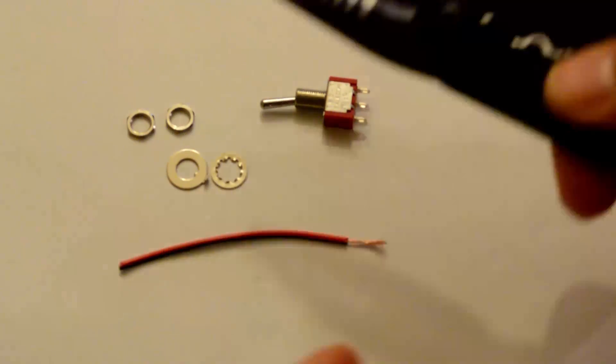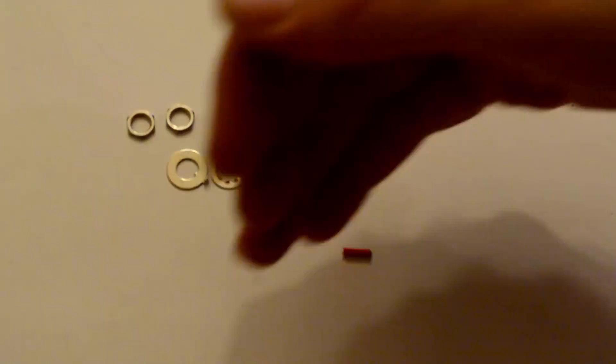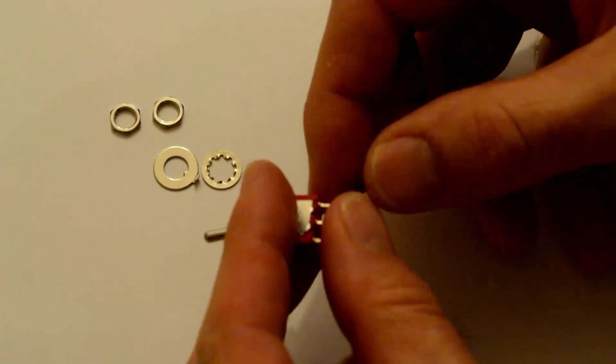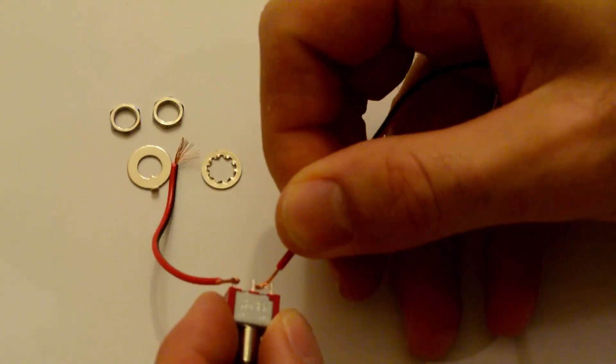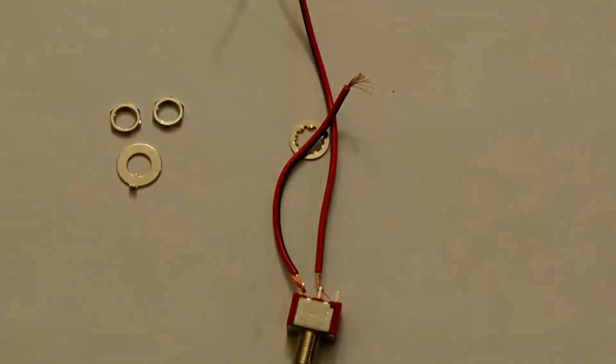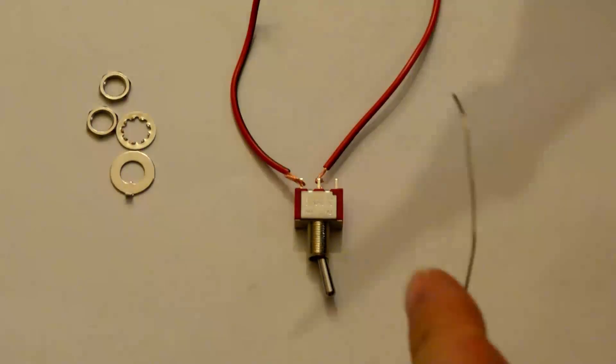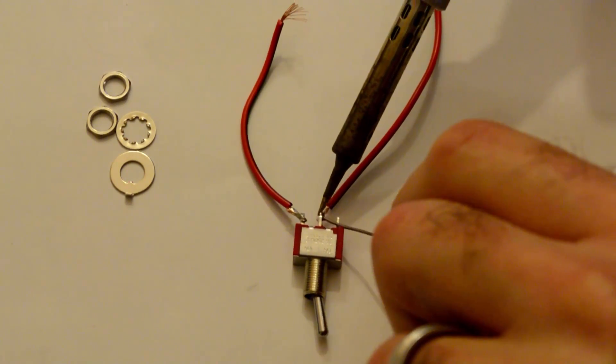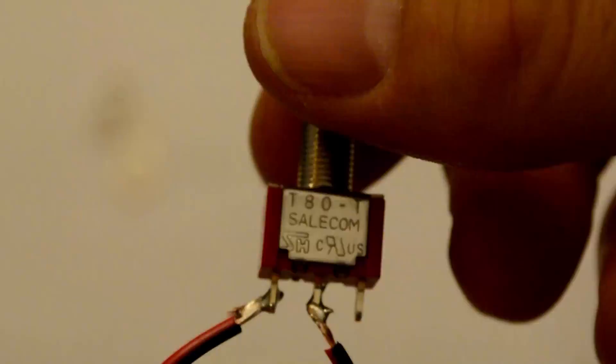So now is the best time to wire up the switch. I wanted my switch to control the positive lead from the battery to the positive terminal of the control board. So cut the remaining wire into a seven inch and three inch piece, then pull apart the wires and strip both ends of the red wire. Then solder the short three inch wire to one of the outside terminals of the switch, and solder the longer wire to the center pin.